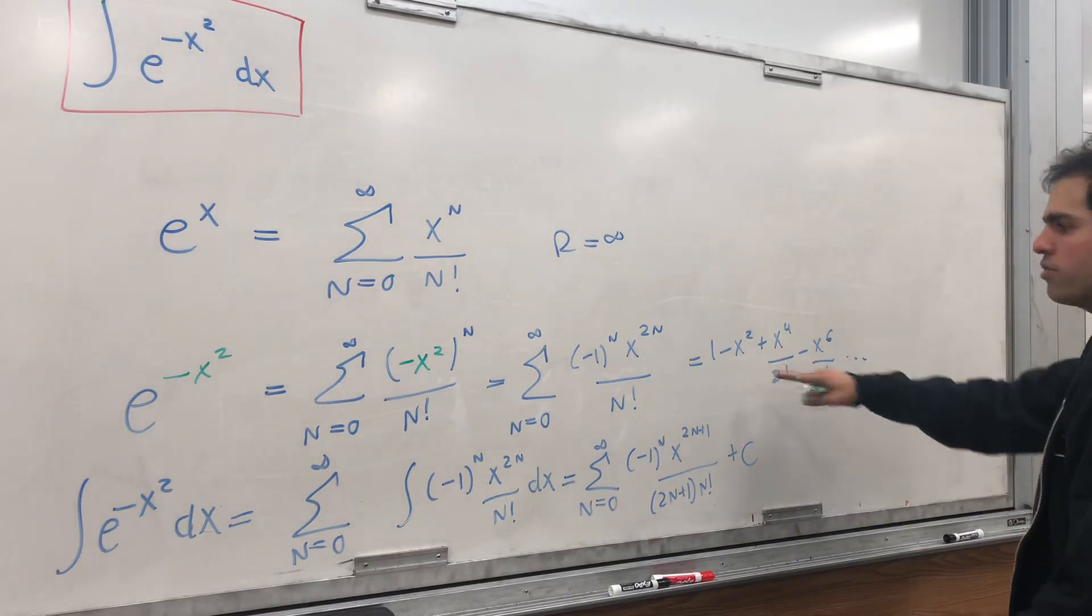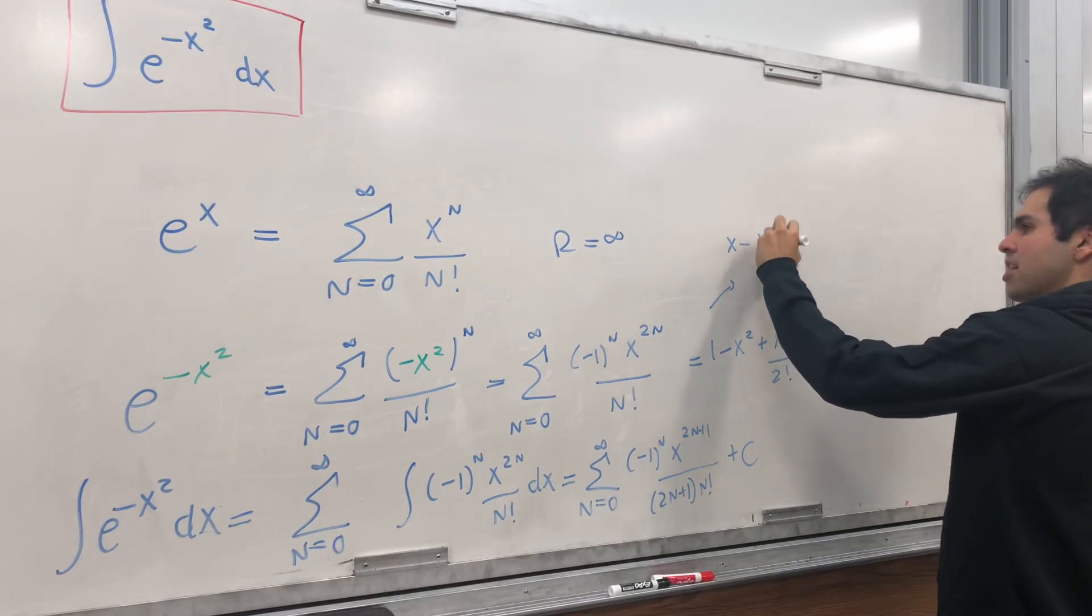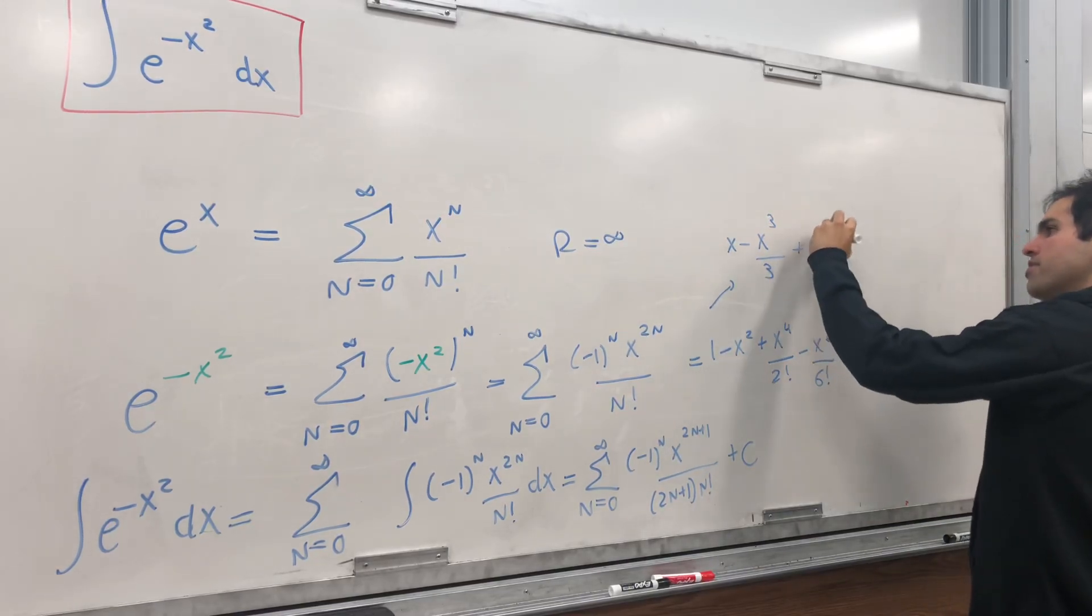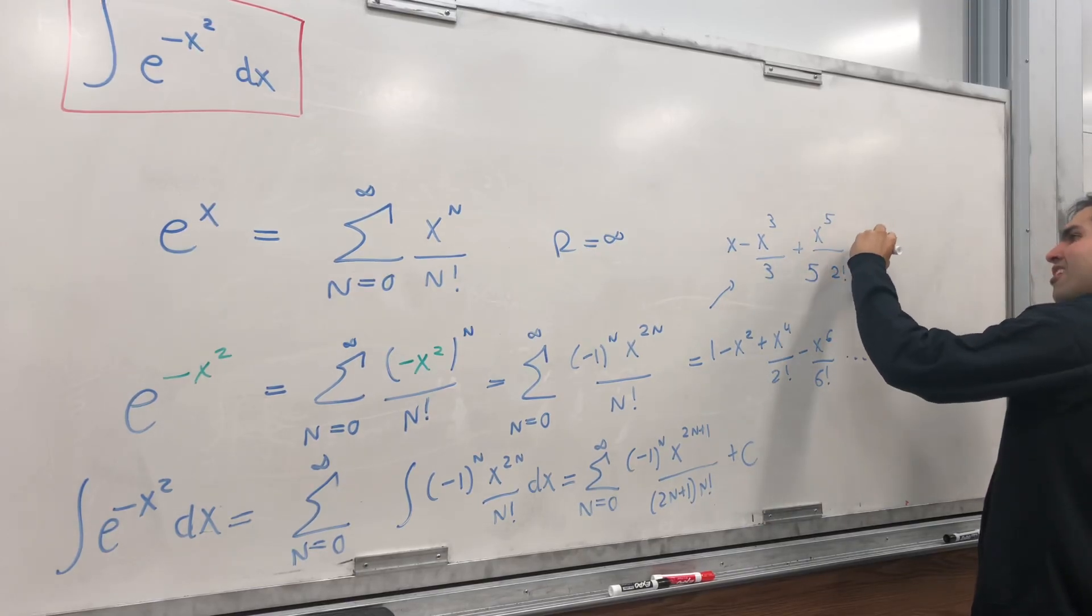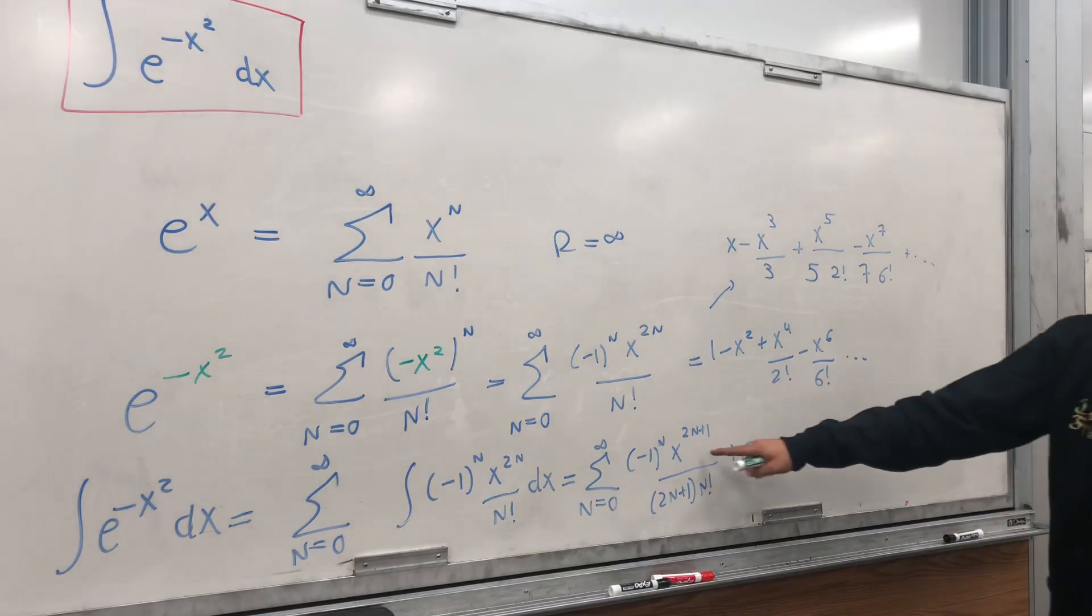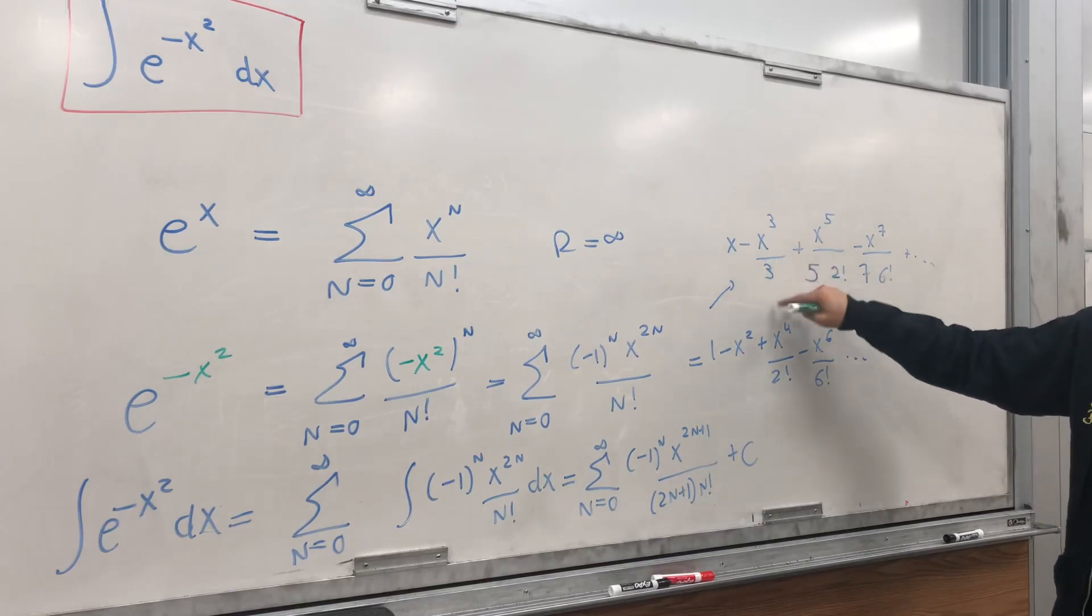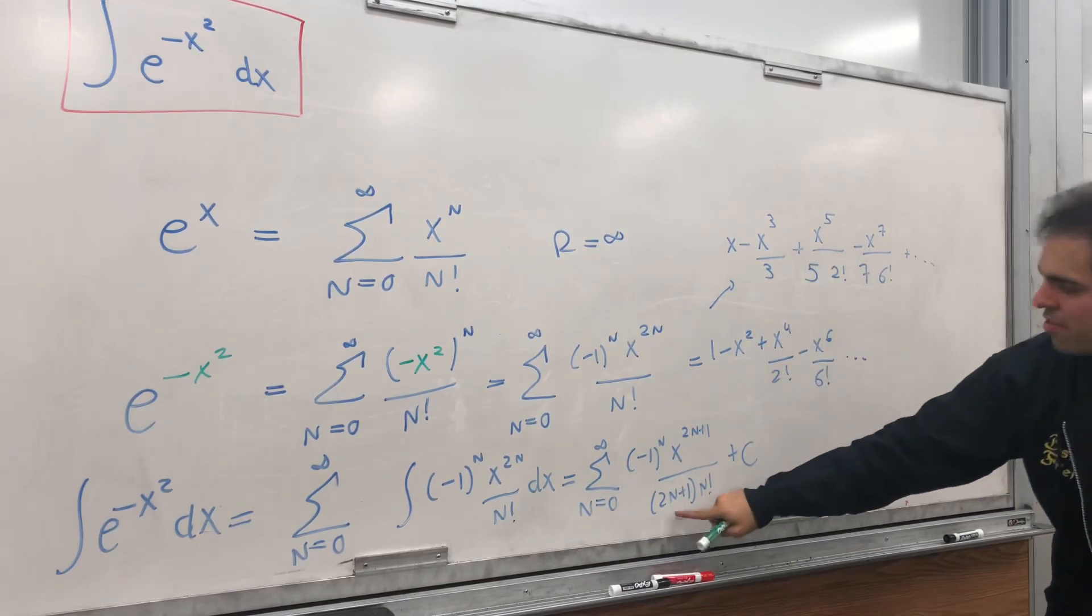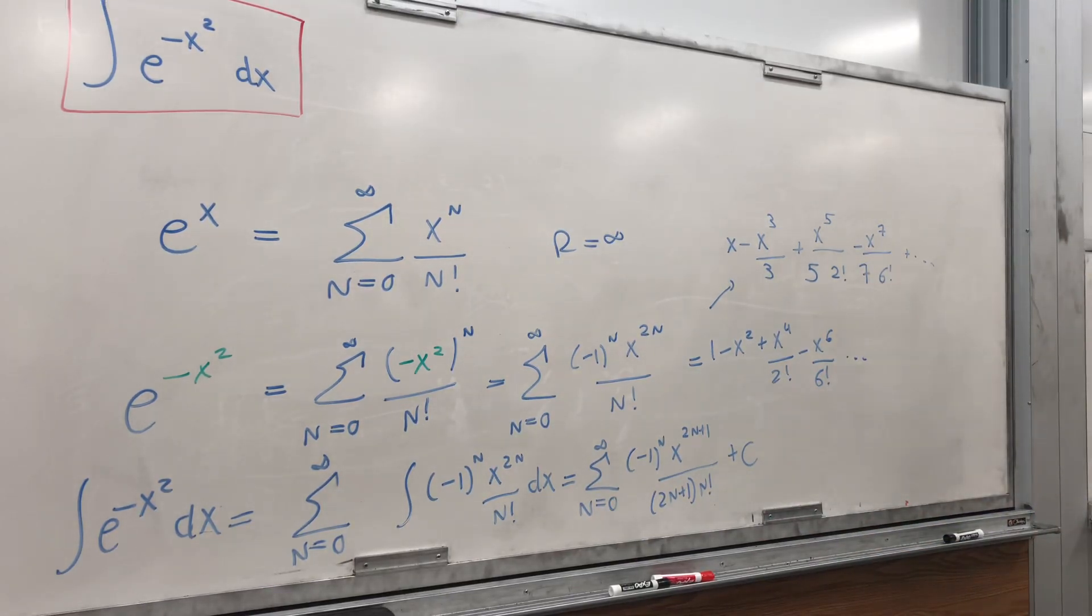So what I'm doing, I'm just integrating this term by term. So it should be x minus x cubed over 3 plus x to the 5th over 5 times 2 factorial minus x to the 7th over 7 times 6 factorial, and so on. This is what this sum means. It means x minus, because it alternates, odd powers, so x cubed over 3, so x to the 2n over 2n plus 1, and we still have those factorials.